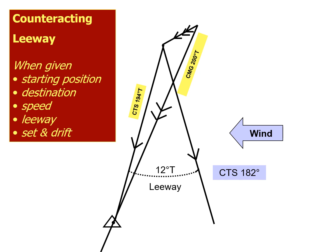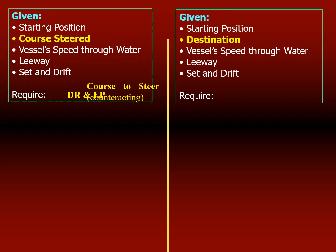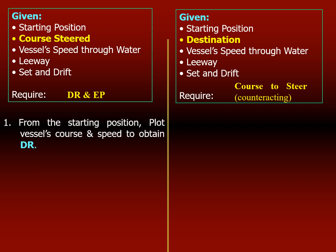Always counteract current first and then leeway. To summarize: when you allow for leeway and current versus counteracting, note that 'allowing' pairs with leeway and 'counteract' always mentions current first. On the left-hand side — allowing — you draw the vessel's starting position, plot course and speed assuming no wind or current to get your DR (dead reckoning) position. The DR position is based only on ship's course and speed. An EP (estimated position) is more accurate because it takes into account leeway and current.